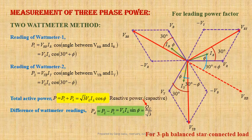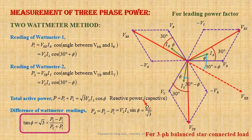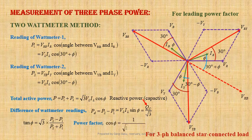From these two equations, we get tan φ equals root 3 times (P2 − P1) divided by (P2 + P1), from which we can determine the power factor angle φ. Load power factor cos φ equals 1 divided by root over (1 + tan²φ). Therefore, for a balanced load, from these two wattmeter readings, we can not only determine total active power, but also compute total reactive power and load power factor.